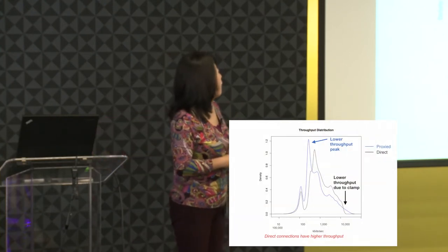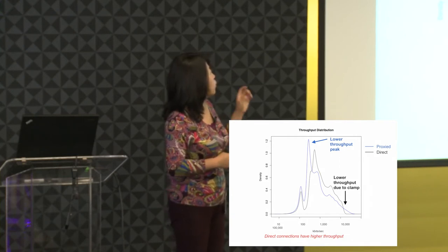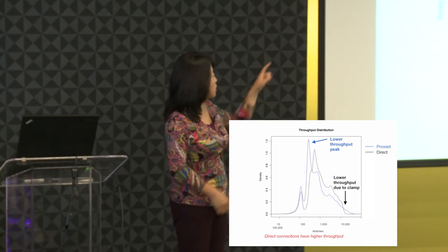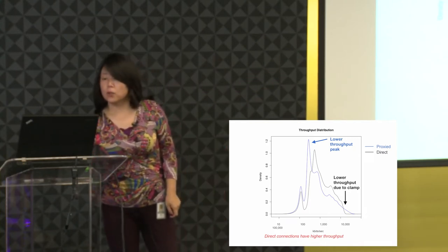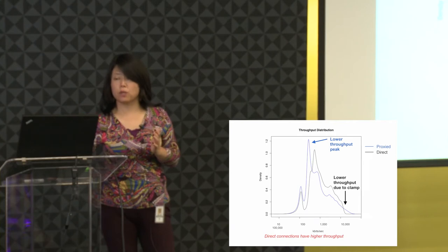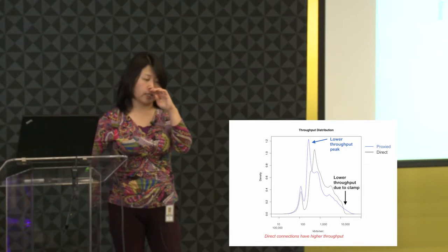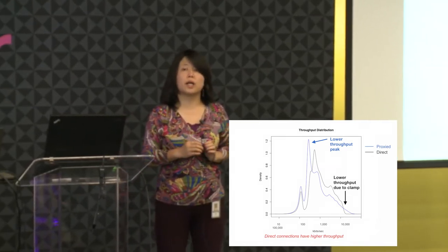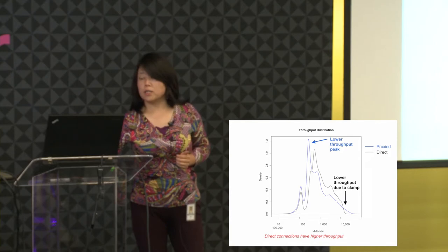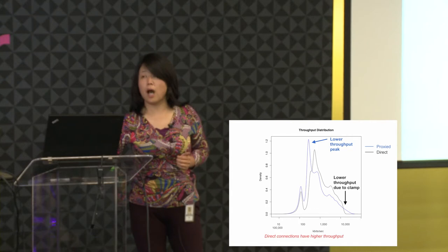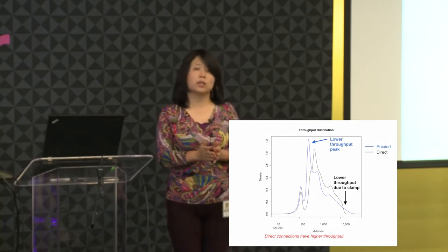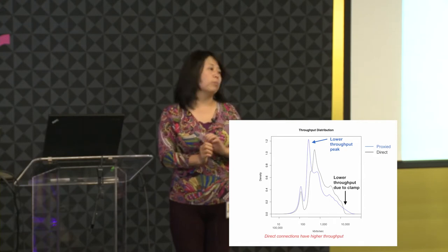The throughput distribution compares proxy (blue) versus direct (black). The proxy connection has a peak at lower throughput, showing it utilizes the network with less efficiency. The direct connection shows a significant drop at lower throughput and a shift toward higher throughput. However, because they apply congestion window size clamping, they are artificially limiting throughput to avoid bloating the network.